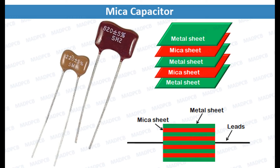What is a mica capacitor and how does it function in electronics? A mica capacitor is a type of capacitor that uses mica as its dielectric material. Capacitors are electronic components that store energy in an electric field between two conductive plates separated by an insulating material, which is known as the dielectric.